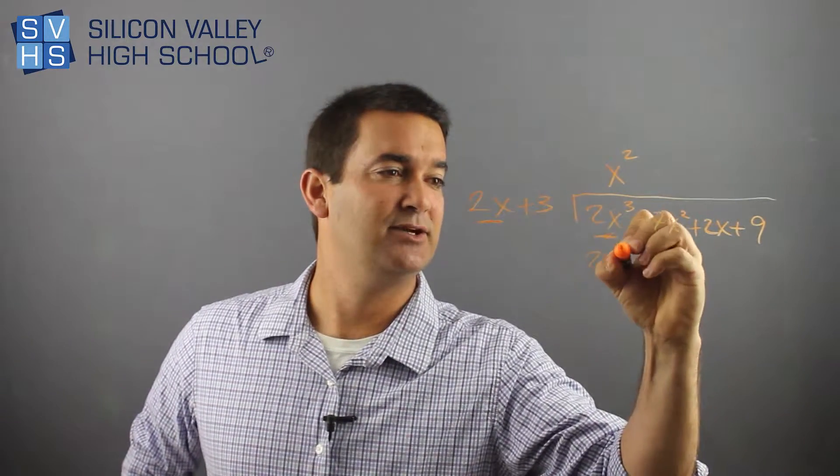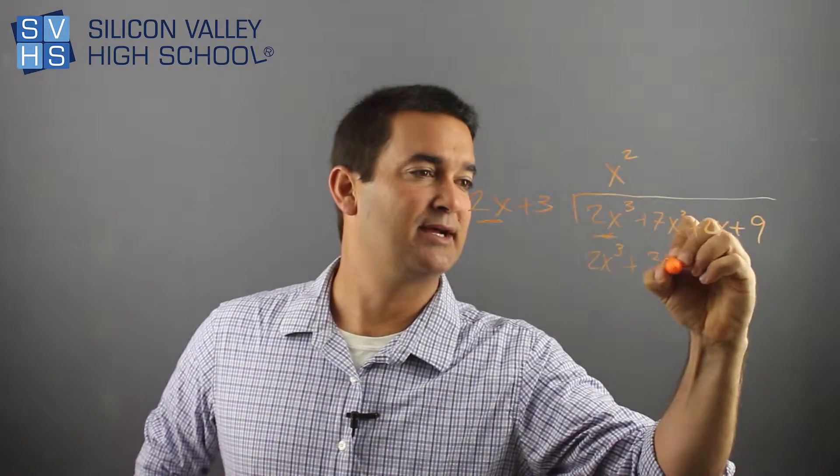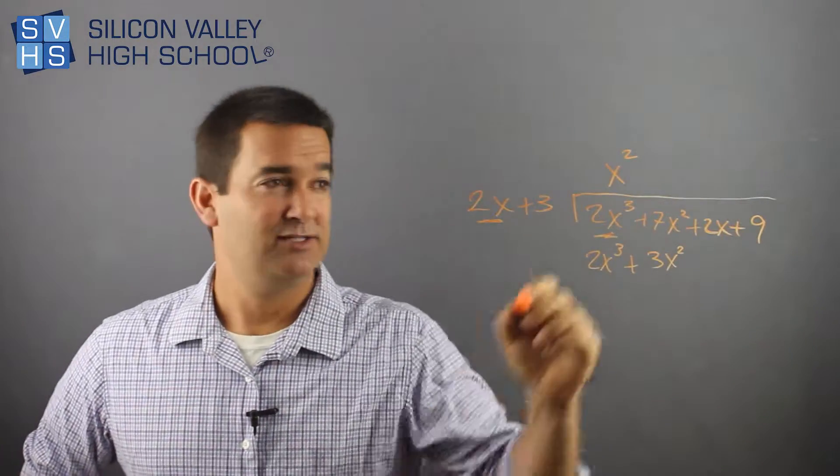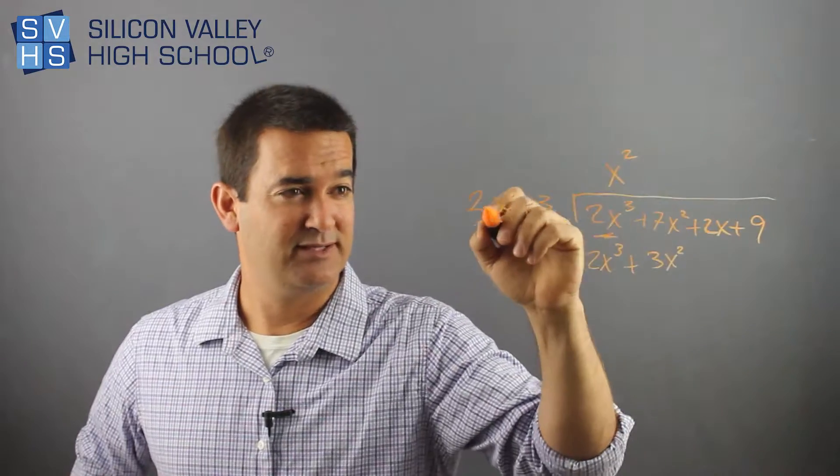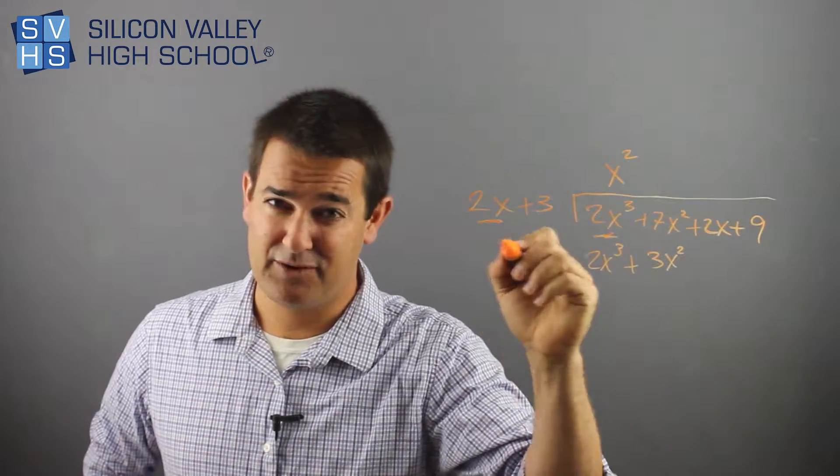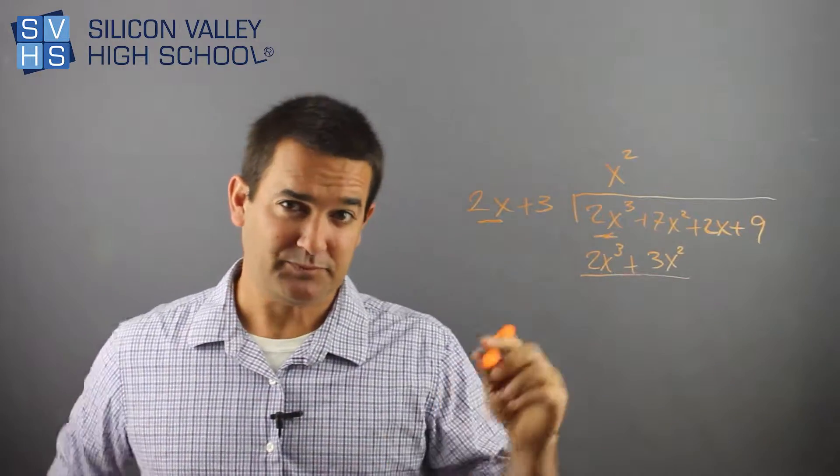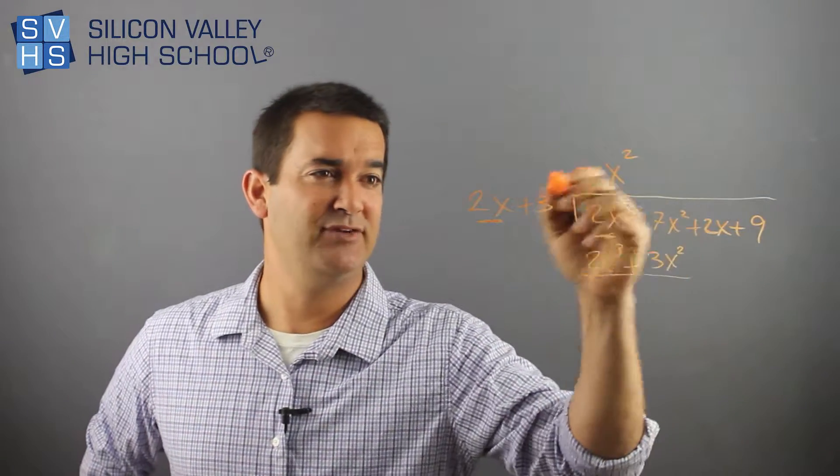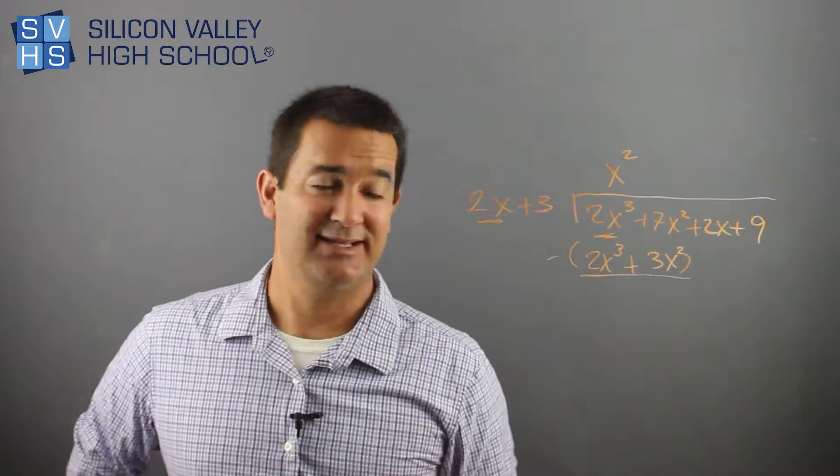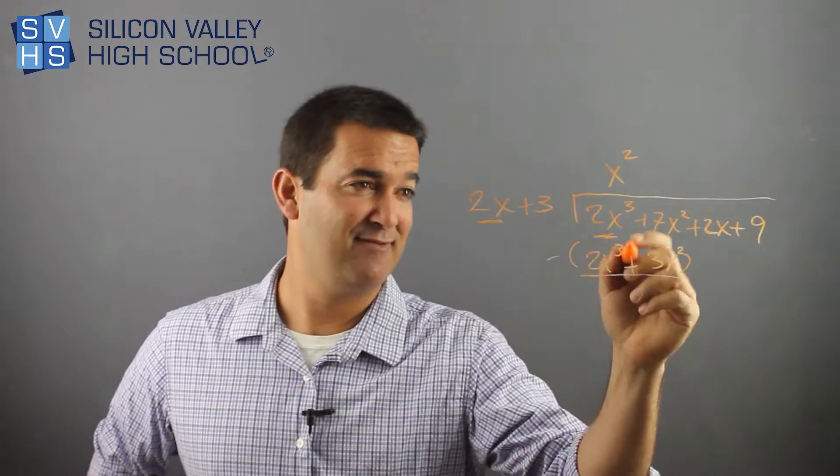So I'm going to distribute this x squared to both these dudes. So I have 2x cubed plus 3x squared. After I determine this value based on looking at him, now I distribute it to both of these guys and write them here. And remember, this is kind of the weird step. Just like normal division, after you multiply this, you're going to actually minus this. You're going to minus that value.